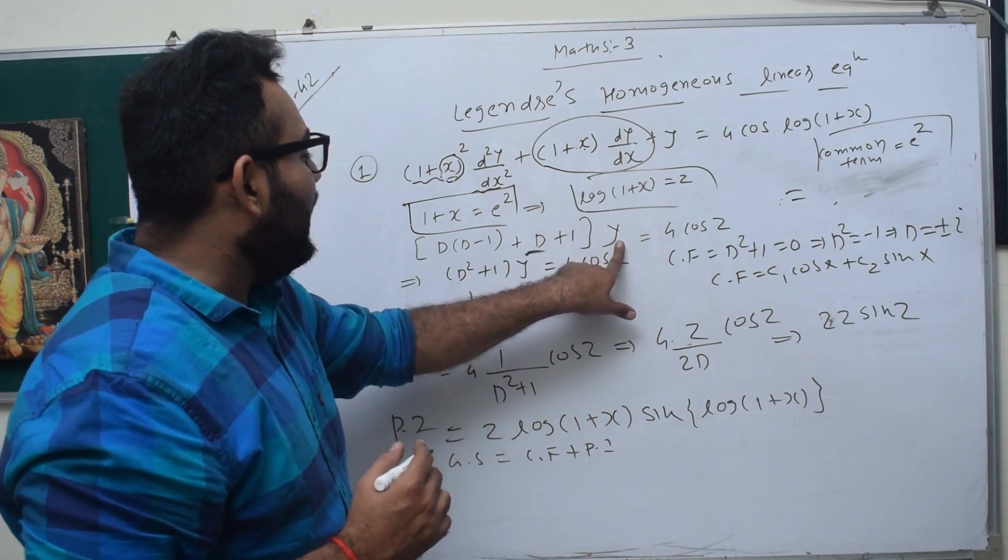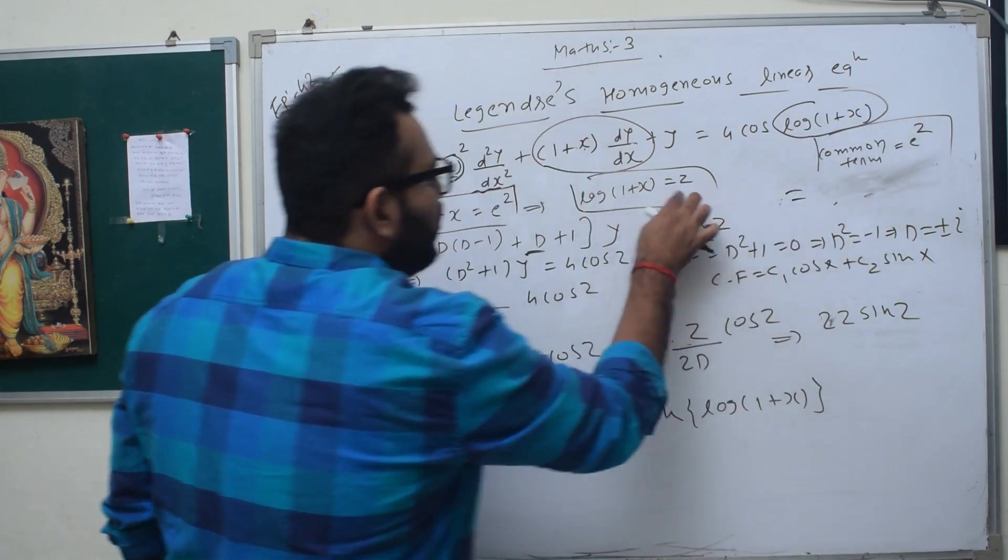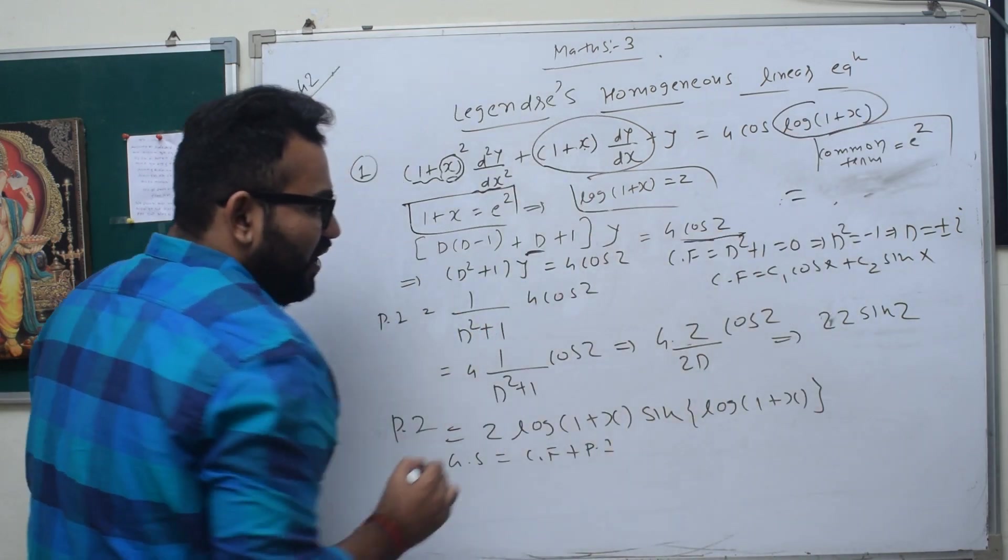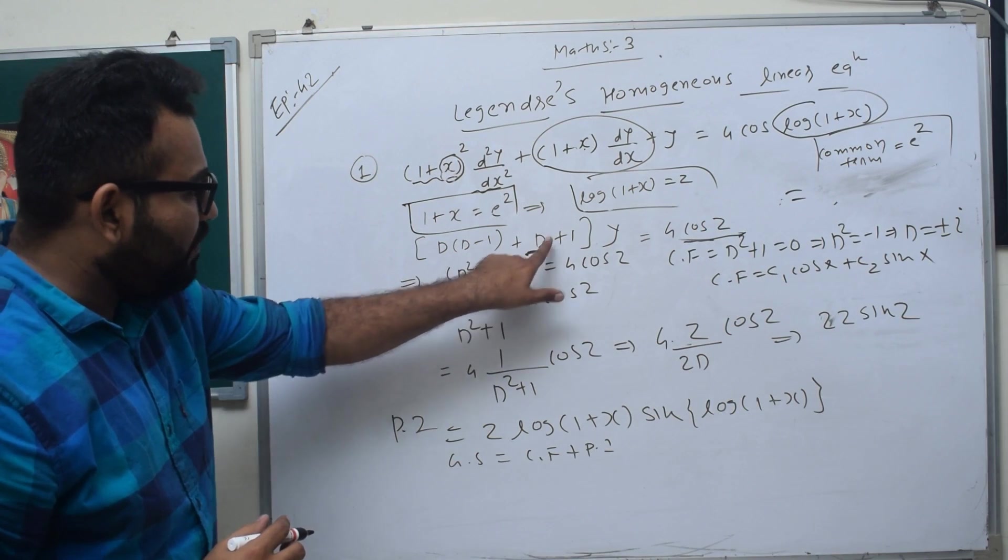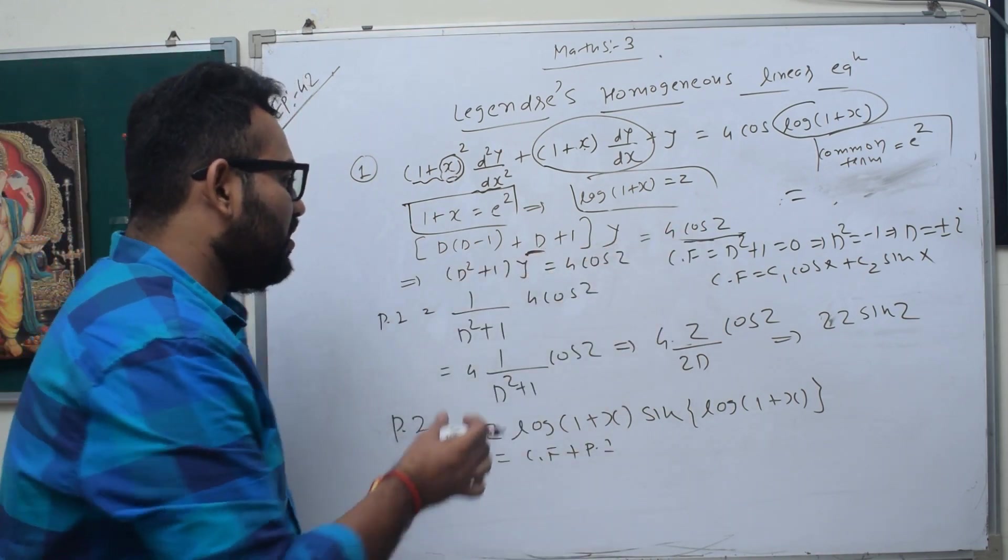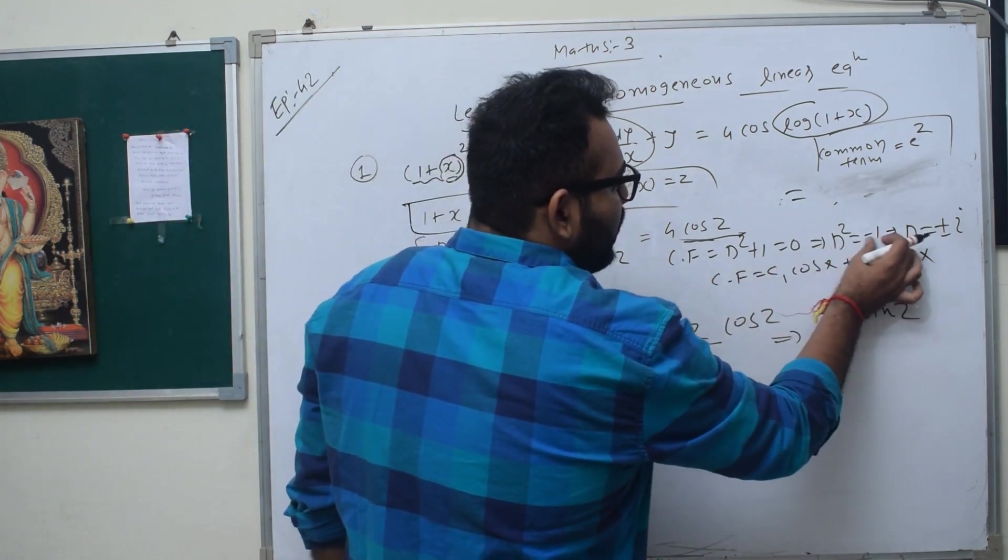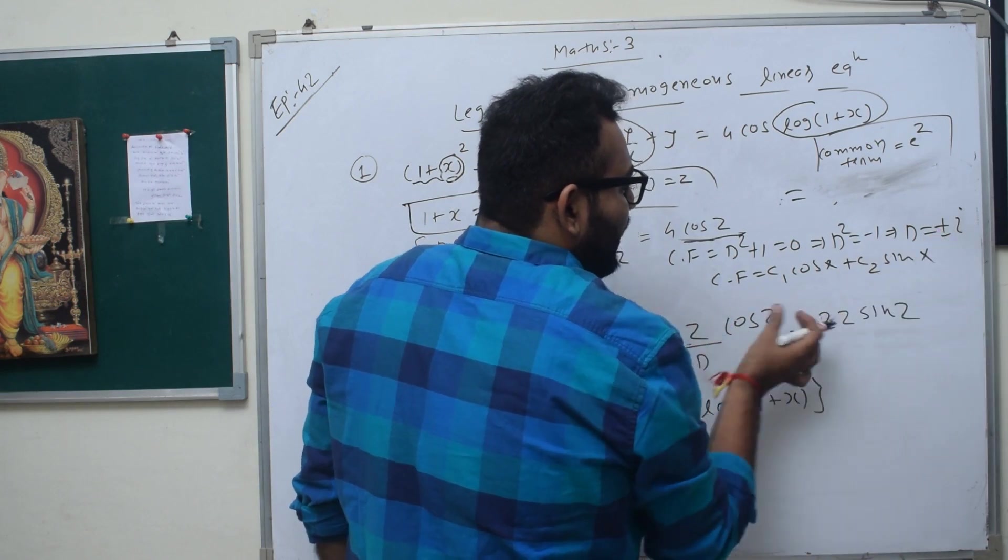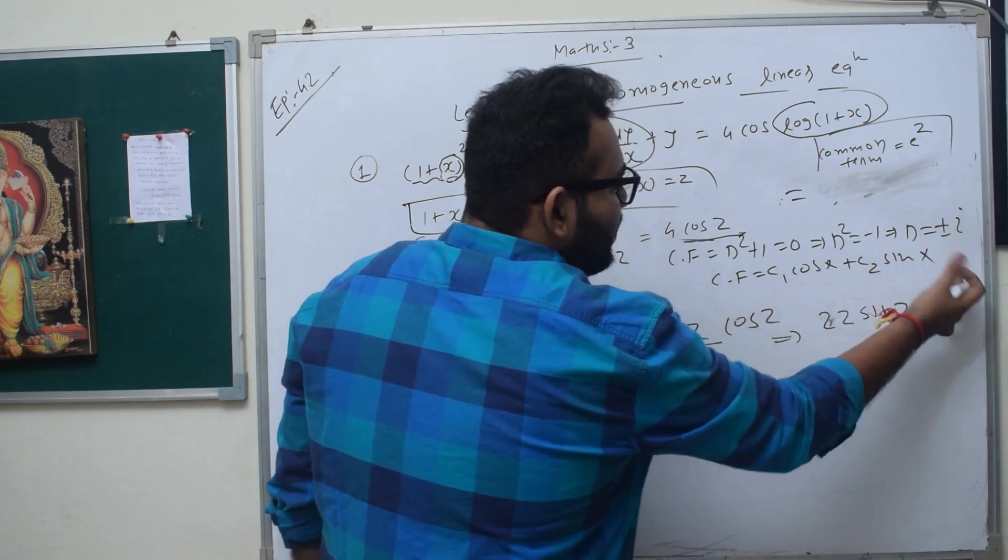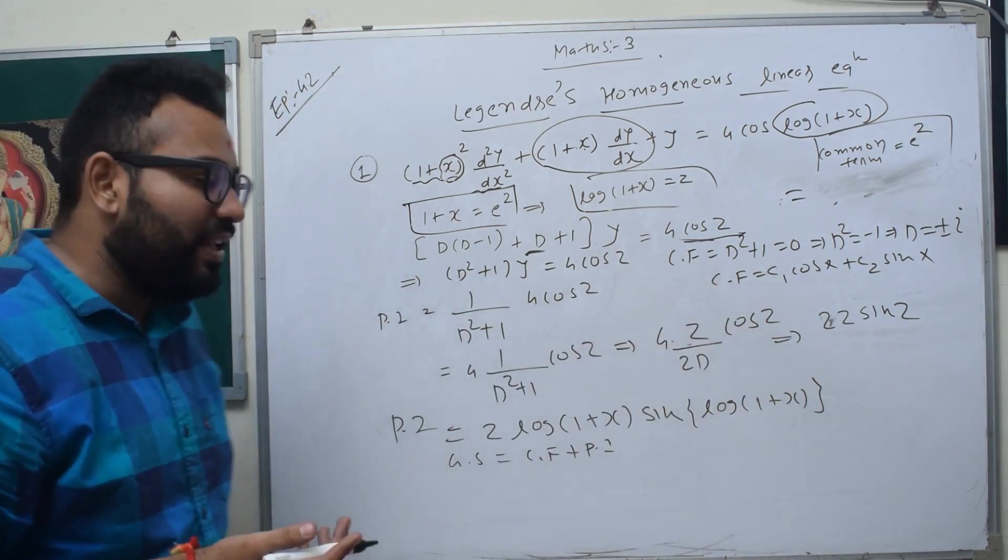Plus 1, y will be equal to 4 cos z. Then it will take log 1 plus x is equal to z, then it will be 4 cos z. So it will be d squared plus 1 into y is equal to 4 cos z. Now, complementary function: d squared plus 1 equal to 0. So d squared is minus 1, and d is equal to plus or minus i. So this will be c1 cos x plus c2 sin x. That's the complementary function. Okay, that's simple.